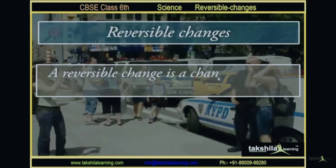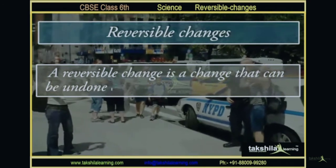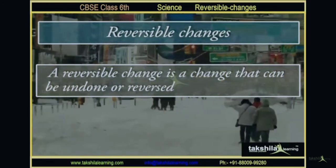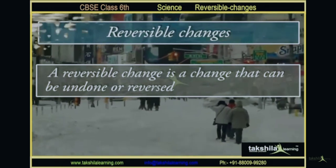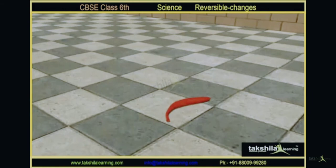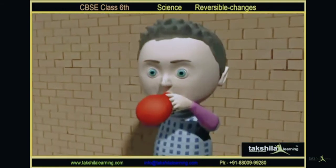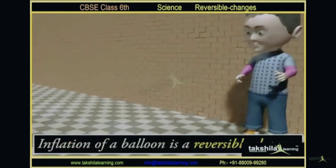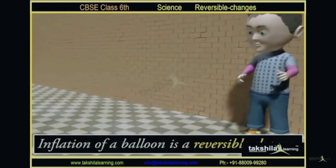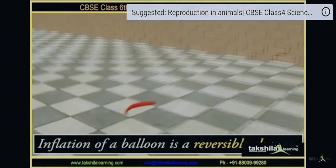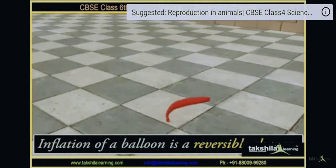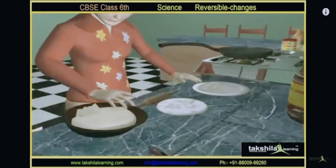What are reversible changes? A reversible change is a change that can be undone or reversed. For example, if you are blowing a balloon, it blows up. And once the air goes out, it deflates. So, inflation of a balloon is a reversible change — it regains its shape.